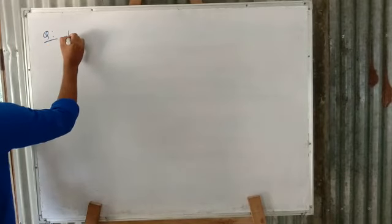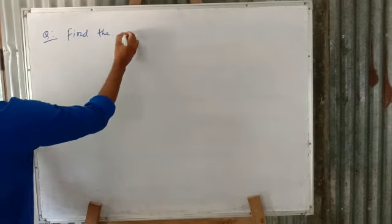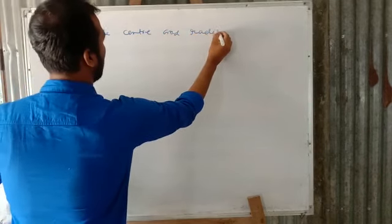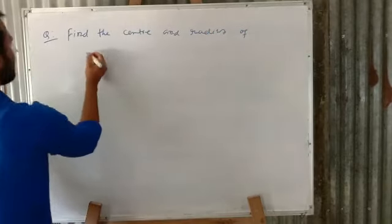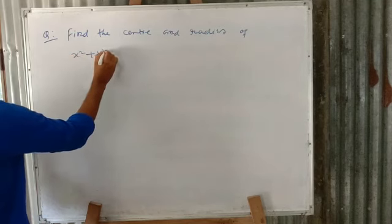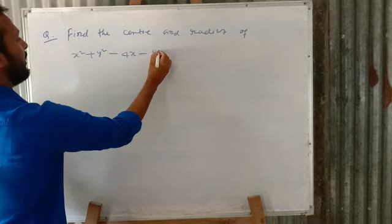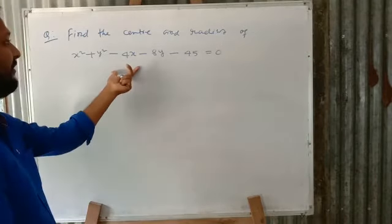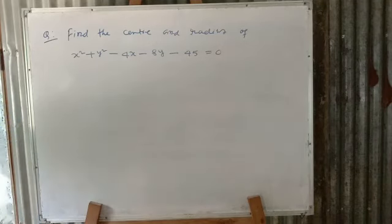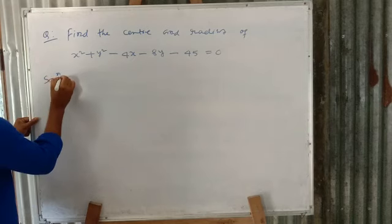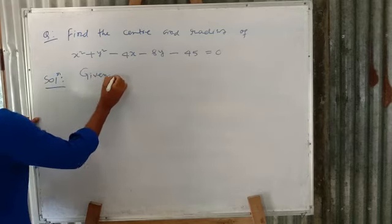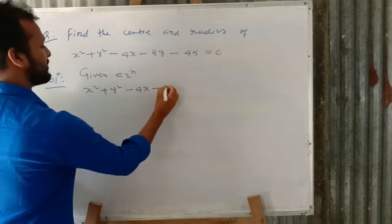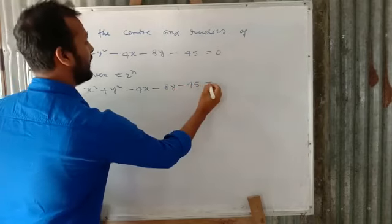Question: Find the center and radius of x² + y² − 4x − 8y − 45 = 0. This is the equation of a circle. We have to find out the center and radius. Solution — given equation: x² + y² − 4x − 8y − 45 = 0.